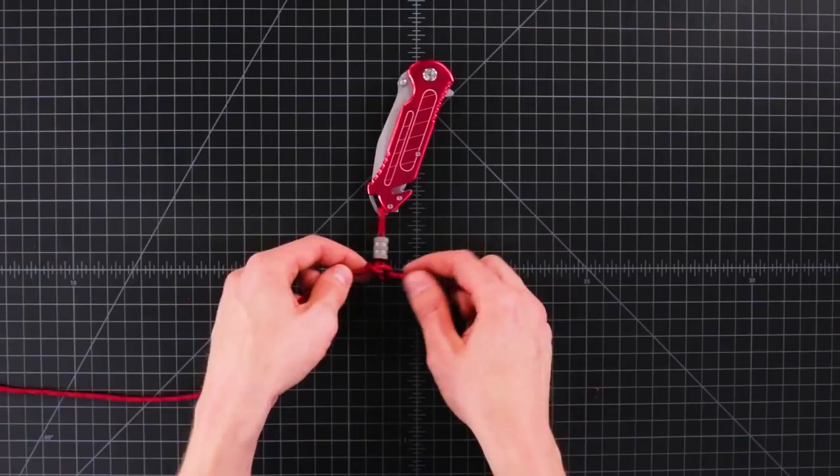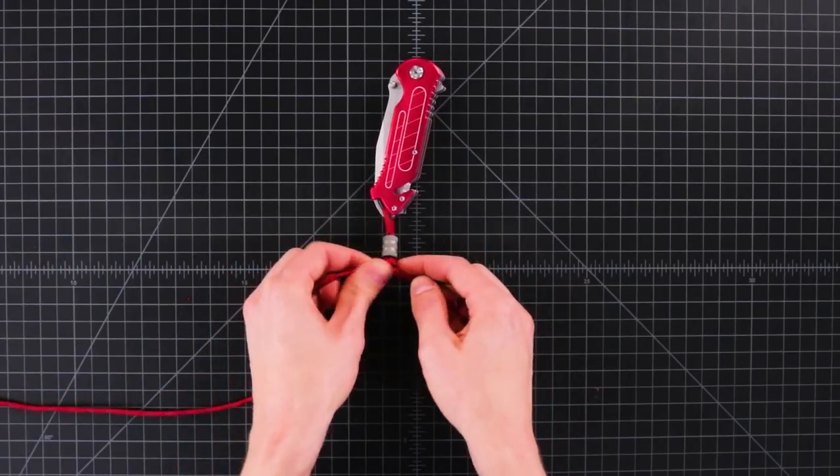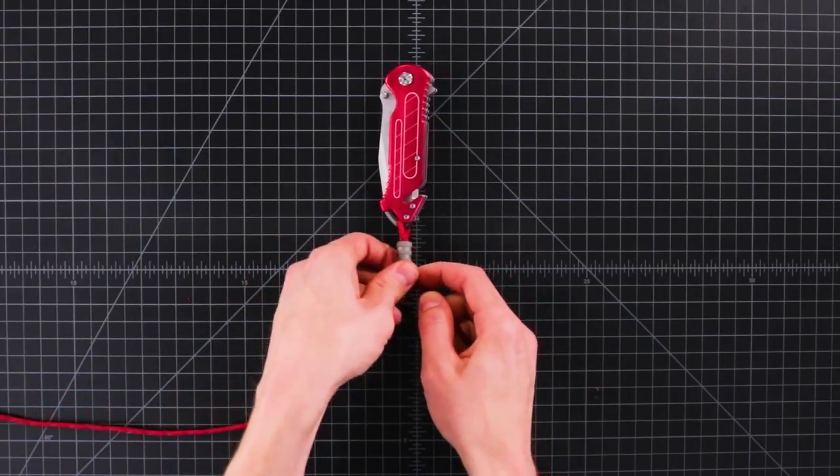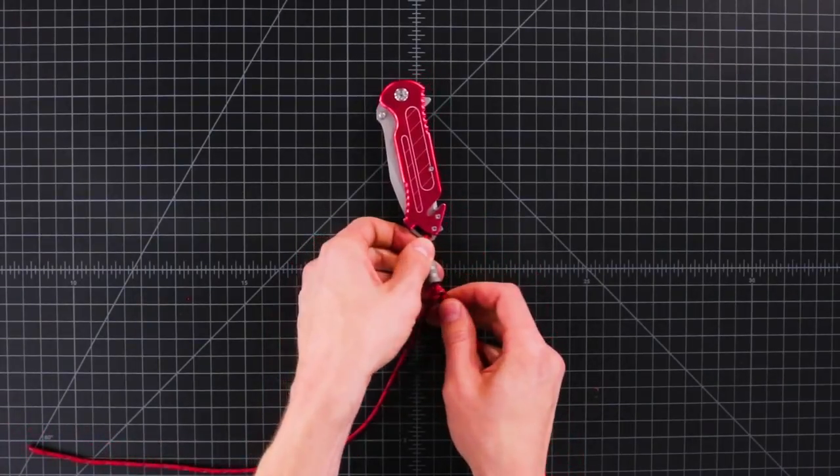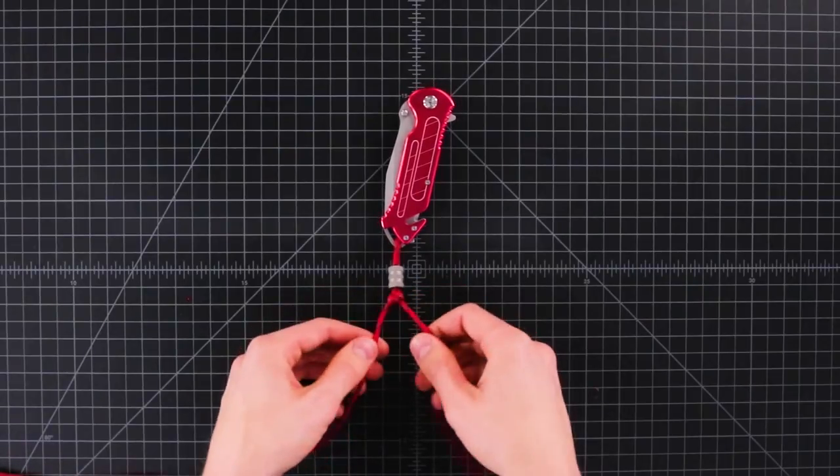You can pull that right up against your bead. Like that. We can tighten that down once we get our second one.